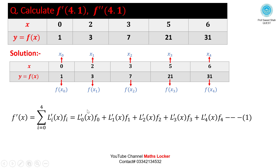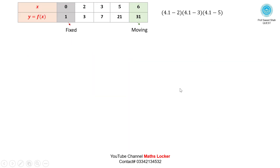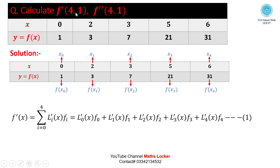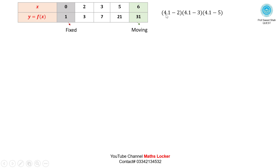We will need to calculate L0', L1', L2', L3', and L4'. For calculating L0', fix the first point of the table and mark all remaining points. Since we want to calculate the derivative at x = 4.1, we compute 4.1 minus 2, 4.1 minus 3, and 4.1 minus 5 in the numerator.